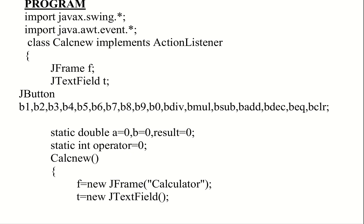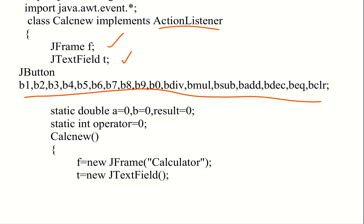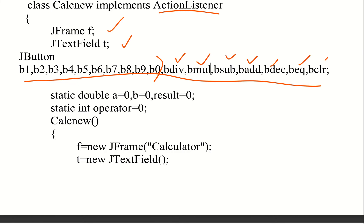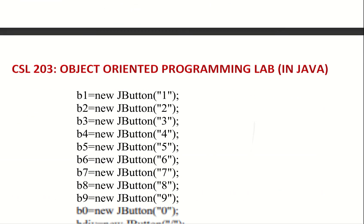I will explain the details in the description box. I will explain the class which implements ActionListener, the JFrame and JTextField, and the JButton. I will declare JButtons for digits 0 to 9, where all numbers are available, plus div, sub, add, decimal, equal to, and clear. The result will be shown initialized to 0, and operator initialized to 0. I will create a frame and text field and show the buttons.